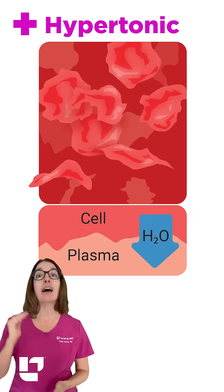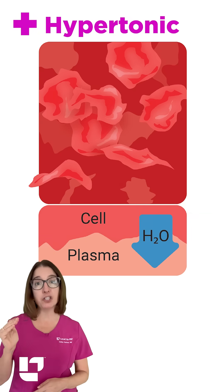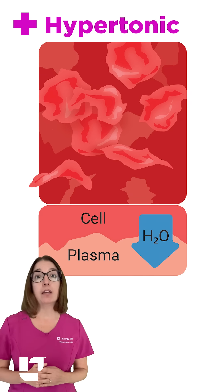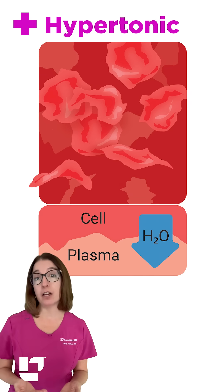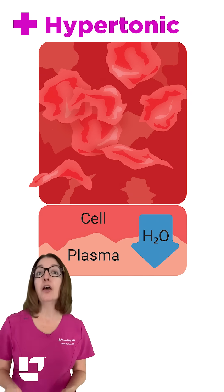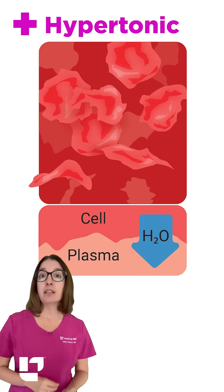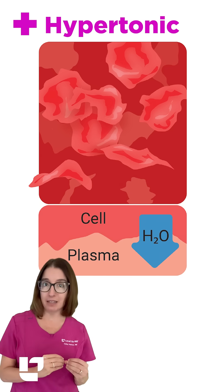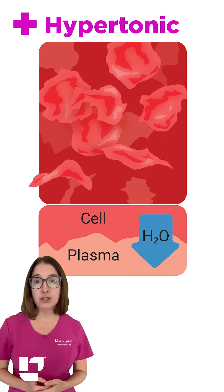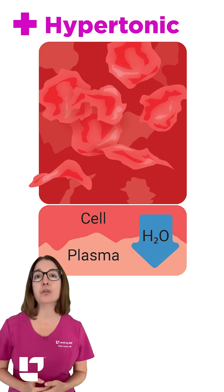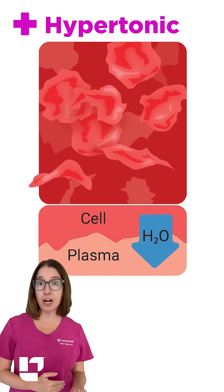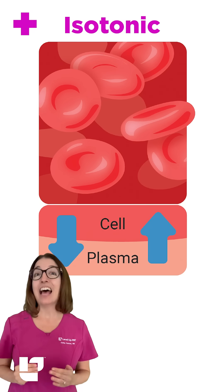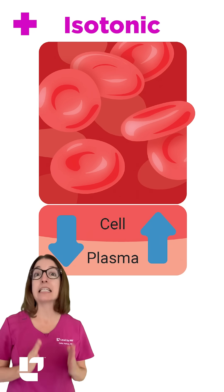Hypertonic fluids have a higher concentration of solutes than the plasma in the bloodstream. So if we administer a hypertonic solution through a patient's IV, this will cause water to move from the cells into the plasma. Examples of hypertonic solutions include 10% dextrose in water and 3% and 5% sodium chloride.